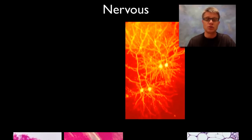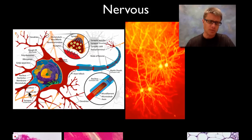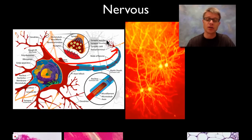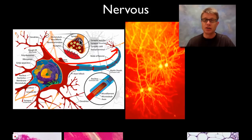Nervous tissue sends quick signals throughout your body. It's made up of neurons and glial cells. Dendrites on one side sense a signal and send an action potential down an axon to another neuron. That's basically what's happening right now in your brain. The nerves throughout your body are nervous tissue.